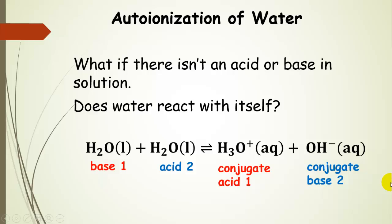What happens if there isn't an acid or base in solution? Does water react with itself? And actually it does. And we call this the auto ionization of water. Here, and it doesn't matter which one is the acid, which one is the base. So I've labeled the first one is a base, second one is an acid. These guys react with each other, and we are going to have an equilibrium concentration of hydronium and hydroxide.